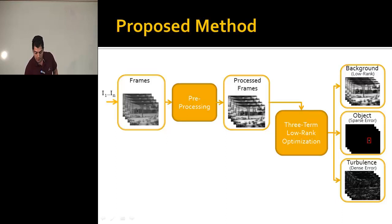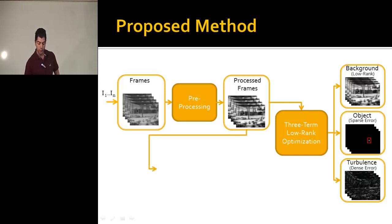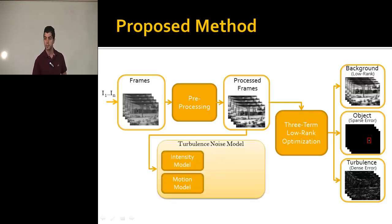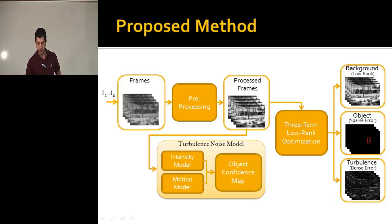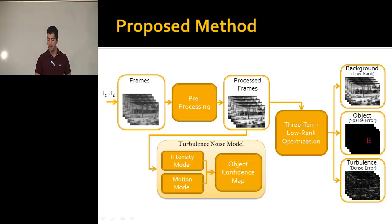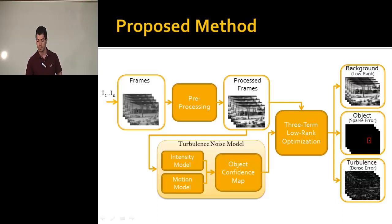However, the sparse constraint we enforce on the object is not enough, as I will explain later. To overcome that, we enforce an additional constraint from a turbulence model built using an intensity and a motion model. We combine them to produce a turbulence model from which we obtain an object confidence map, and this map is fed to the low-rank decomposition as a prior.